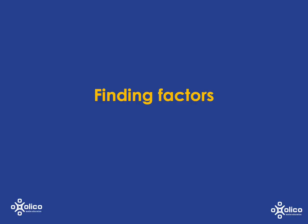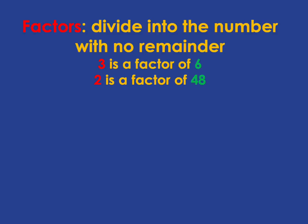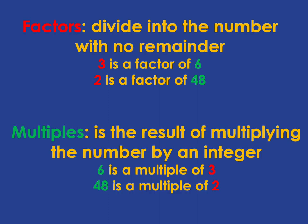Let's have a look at finding factors. We say 3 is a factor of 6 because 3 divides into 6 with no remainder, and 2 is a factor of 48 because 2 divides into 48 with no remainder.